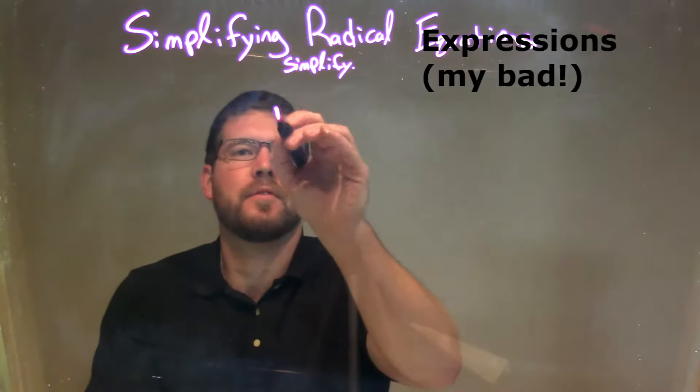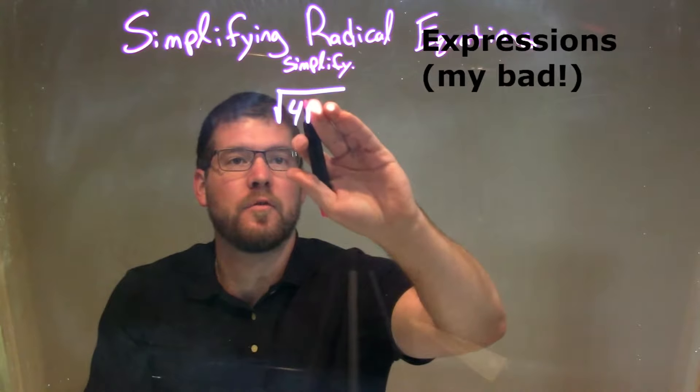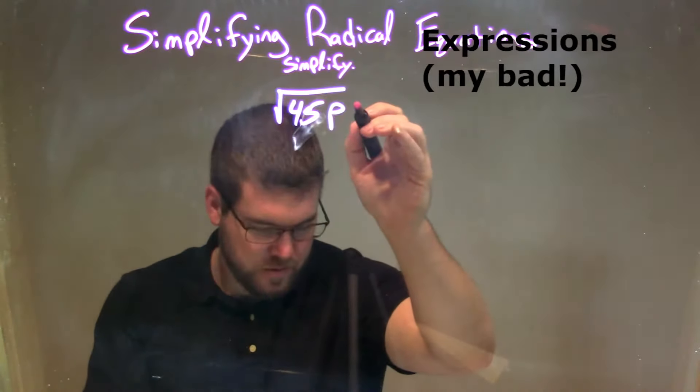If I was given this problem, the square root of 45, that's not a 5, that's a p right there, 45p squared.